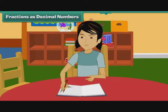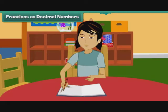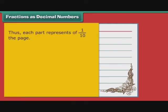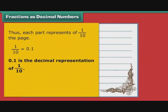Fractions as Decimal Numbers. Arpita is busy decorating the pages of her personal diary. The lines on a page of her diary divide the page into 10 equal parts. Thus, each part represents 1 by 10 of the page. 1 by 10 can also be written as 0.1. Therefore, we can say that 0.1 is the decimal representation of 1 by 10.